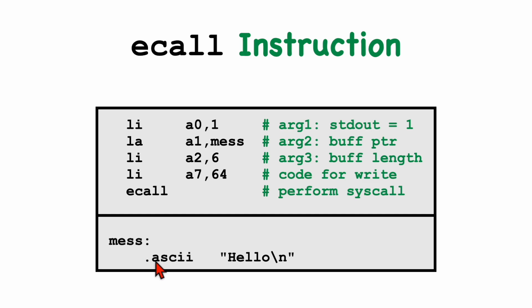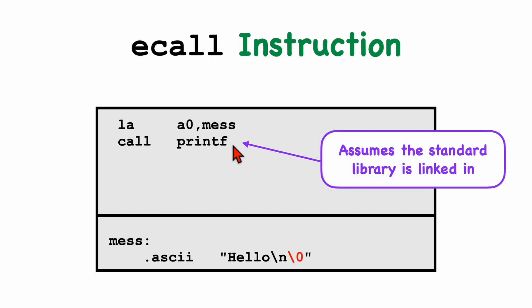Somewhere in memory we have these characters, and here we see the use of an assembler directive called ASCII, which puts a string of characters into memory. If you want to print a message, there's an easier way: call the printf function. Printf can take a variable number of arguments, but here we provide just one — in A0, the address of a printf-type string. That string must be null-terminated, so a null character is added at the end. Calling this with a regular call instruction assumes the program contains printf, which is linked in from the standard library.